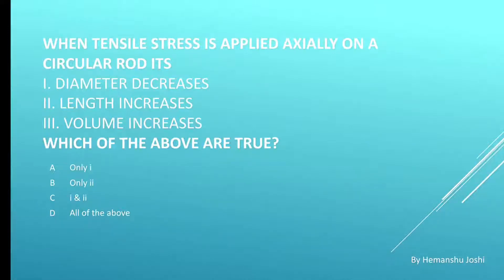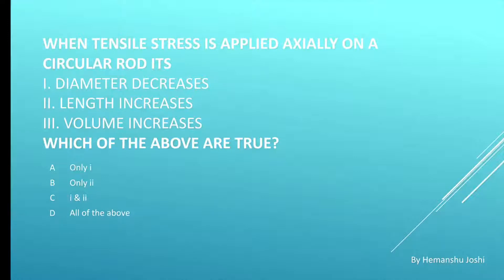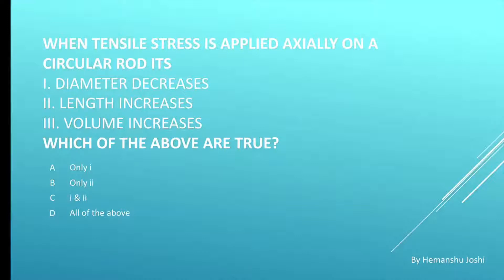Next question. When tensile stress is applied axially on a circular rod, three statements are given: first, diameter decreases; second, length increases; third, volume increases. Which of the above are true? Options are A. Only one, B. Only two, C. One and two, D. All of the above. As we know, if the component is subjected to tensile stress, the length will increase, so the second option is right, and diameter will decrease, so the first one is also right. Our correct answer is C. One and two.